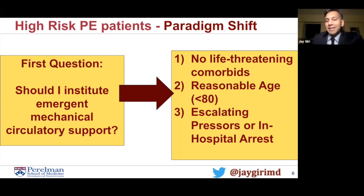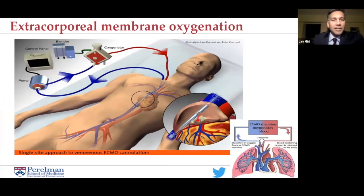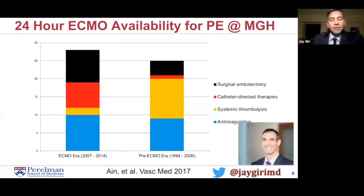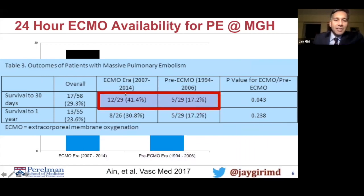The most common form of support used nationally — and what we use in our center — is ECMO. ECMO is generally placed percutaneously, fem-fem, with large cannulas in the artery and vein, taking over circulatory support and oxygenation. Data from MGH showed that before ECMO availability from 1994 to 2006, this group of patients on multiple pressors or in cardiac arrest had 17% in-hospital survival. During the ECMO era, that rose to about 41%. Not perfect apples-to-apples comparisons, but things seemed to improve when ECMO was made available. Where this field could go is towards isolated right ventricular assist devices — the Protec Duo from Tandem Life and the Impella RP from Abiomed — for some of these patients.